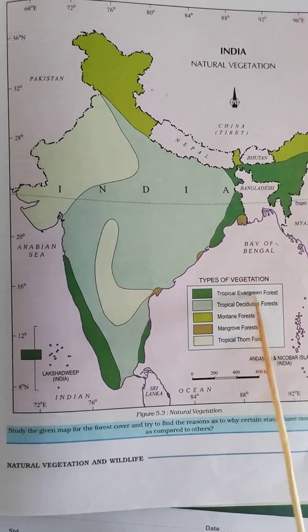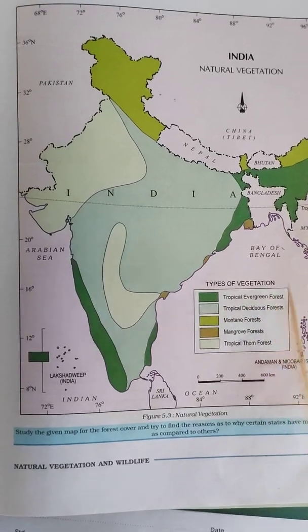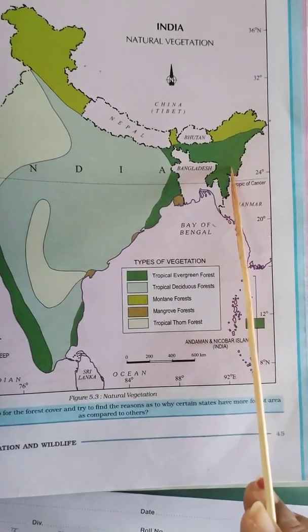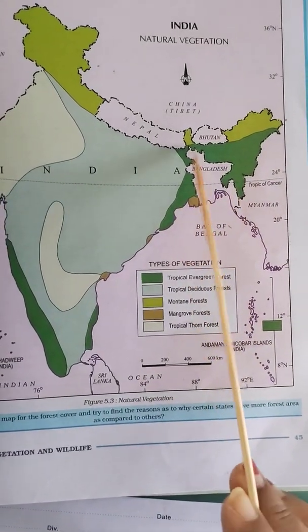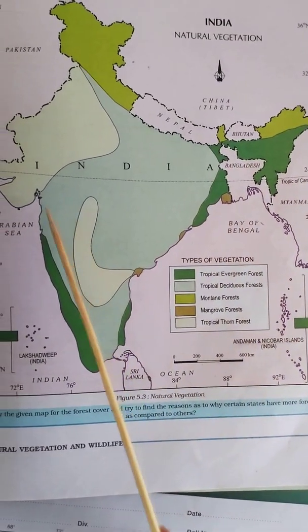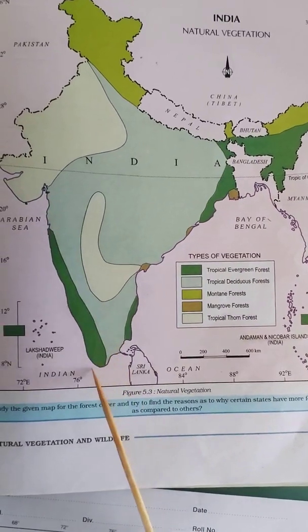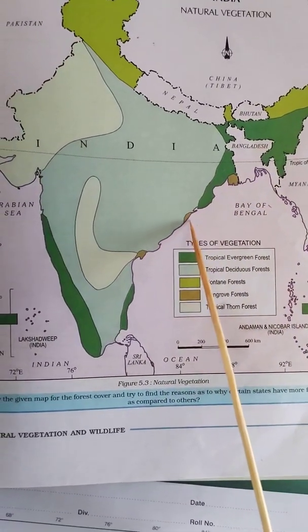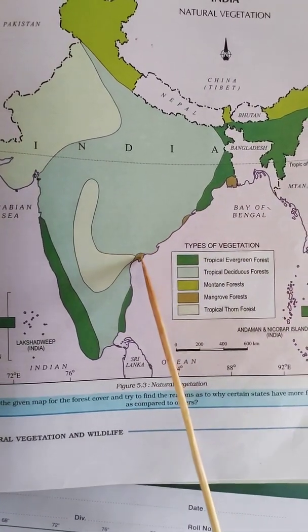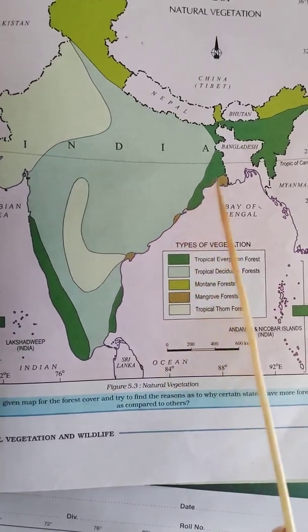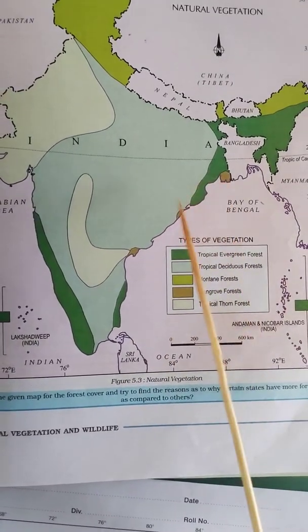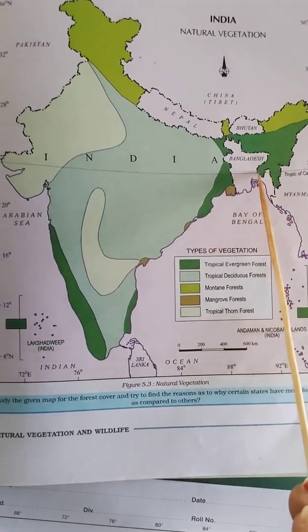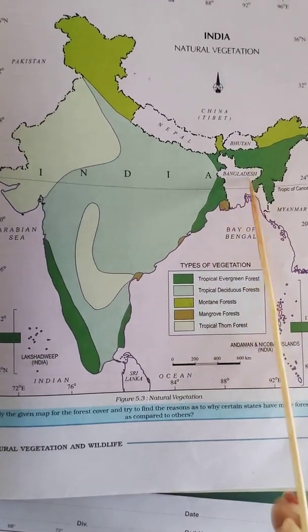There are six types of forest in India. Tropical Evergreen Forest is shown in the darkest shade and is found in areas with very high rainfall. Mangrove Forest is found in the delta areas of rivers. These are relatively simple to identify.